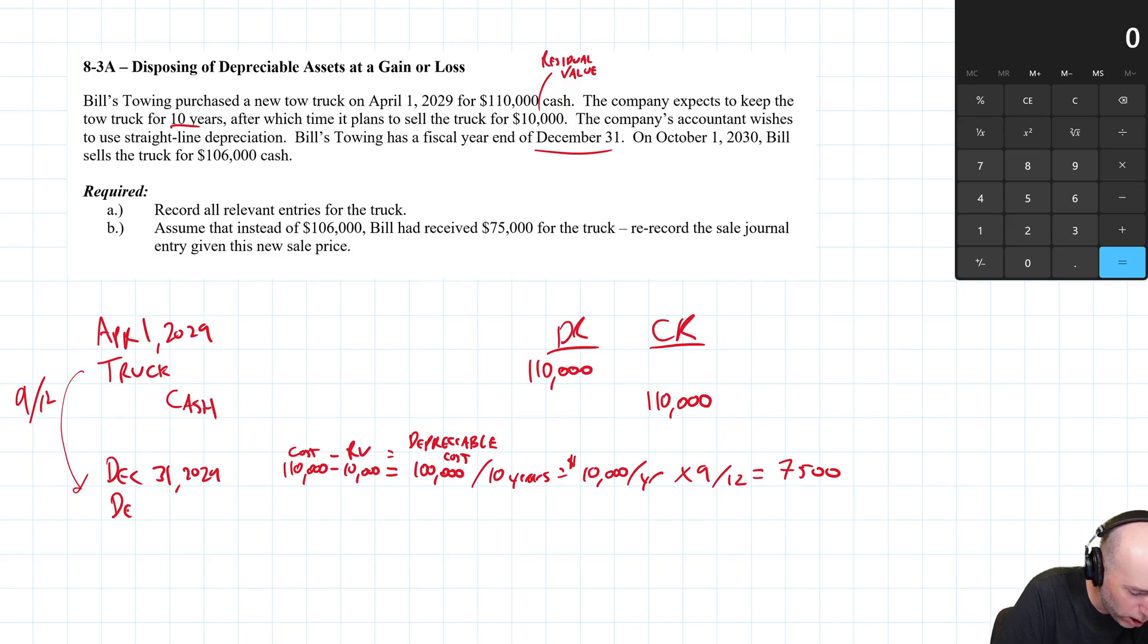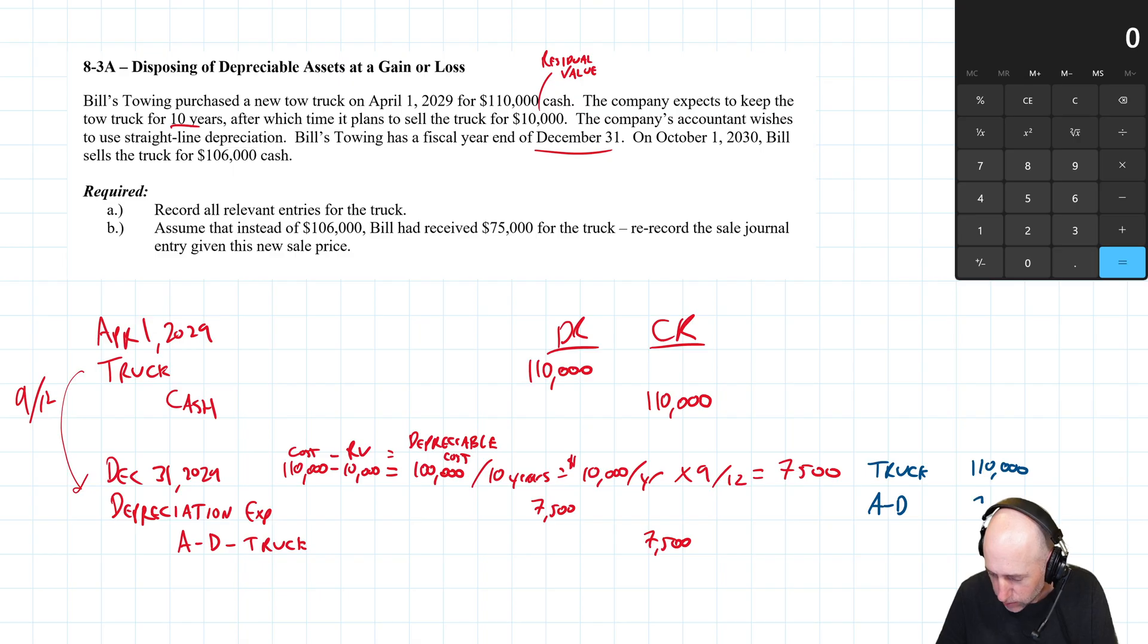The journal entry for depreciation, always the same journal entry. Debit Depreciation Expense $7,500, and we credit Accumulated Depreciation - Truck $7,500. This wasn't asked for but you'd make financial statements and on your financial statements you'd say what the truck is worth according to the accountant, the book value of the truck. According to our books this truck was worth $110,000 when we bought it, it has Accumulated Depreciation of $7,500. Truck minus AD Truck equals Truck Net, and we call that the net book value of the truck: $102,500.